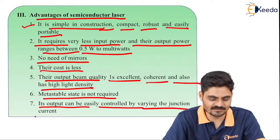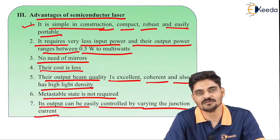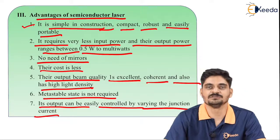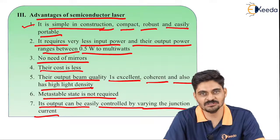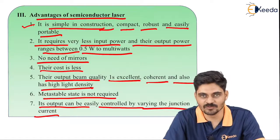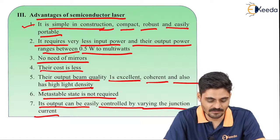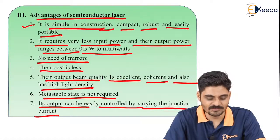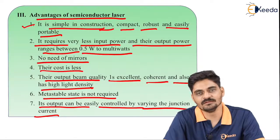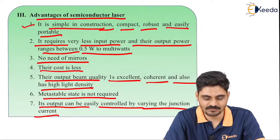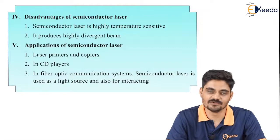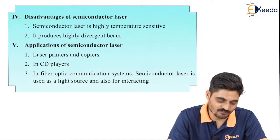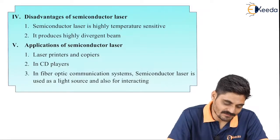The output can be easily controlled by simply varying the junction current. By changing the amount of current at the junction under forward bias condition, you can achieve different intensities of laser light. However, there are a few disadvantages as well.